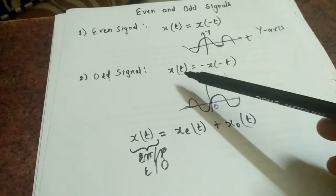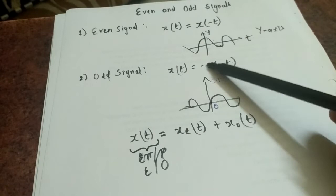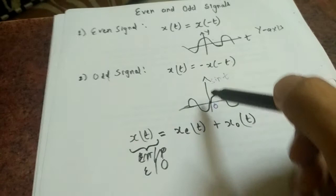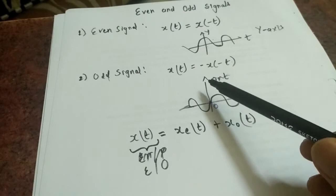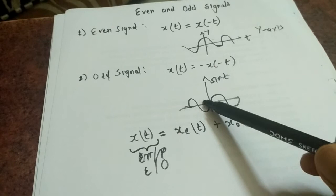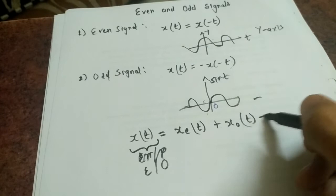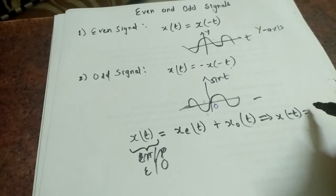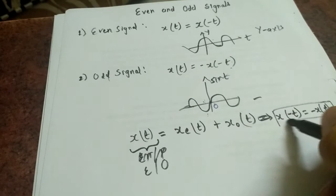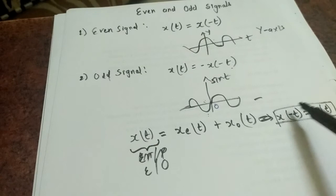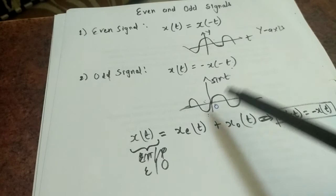Odd signals are those signals which satisfy the equation where the time-reversal form gives a negative. This is the graph of sin(t) — if you place a mirror here, you get a mirror image but with amplitude reversal. So we can say x(-t) equals minus x(t). Odd signals are symmetric about the origin.